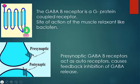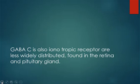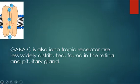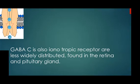Presynaptic GABA-B receptors act as autoreceptors, causing feedback inhibition of GABA release. GABA-C is also an ionotropic receptor, less widely distributed, and is found in the retina and pituitary gland.